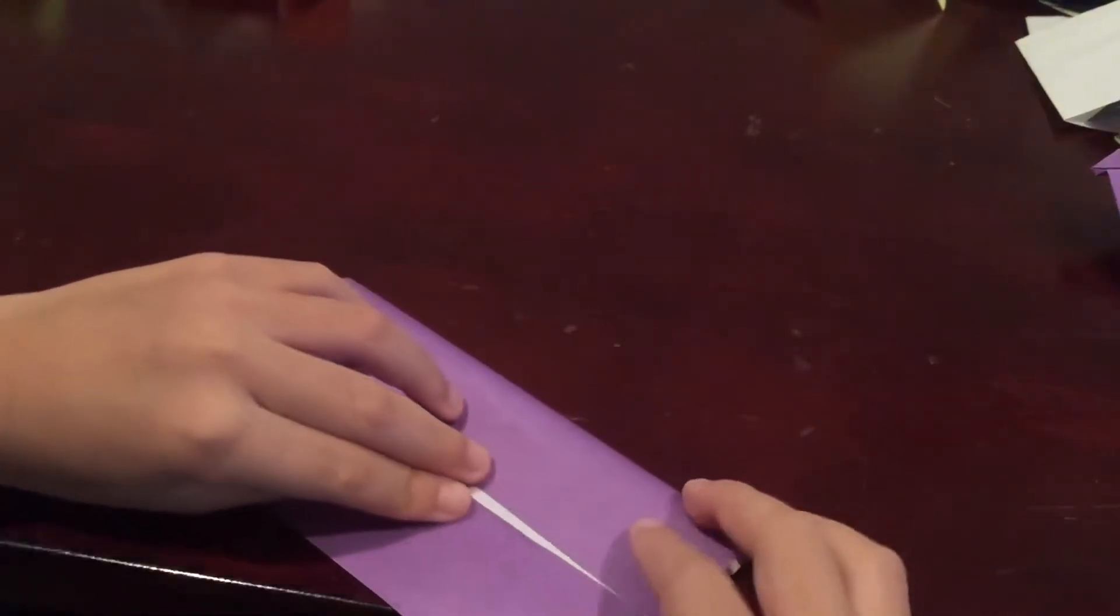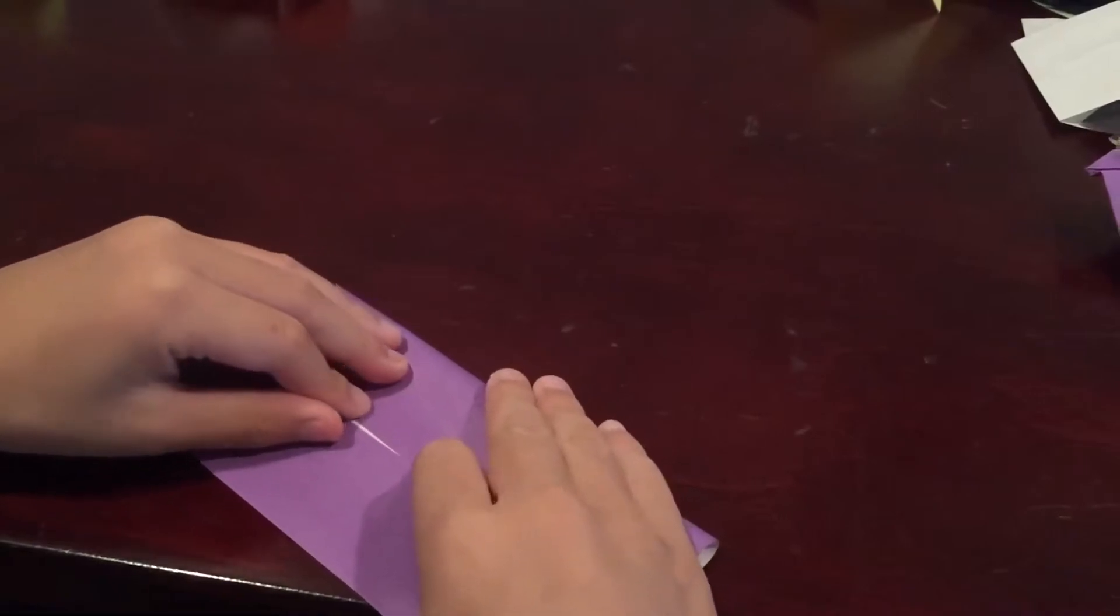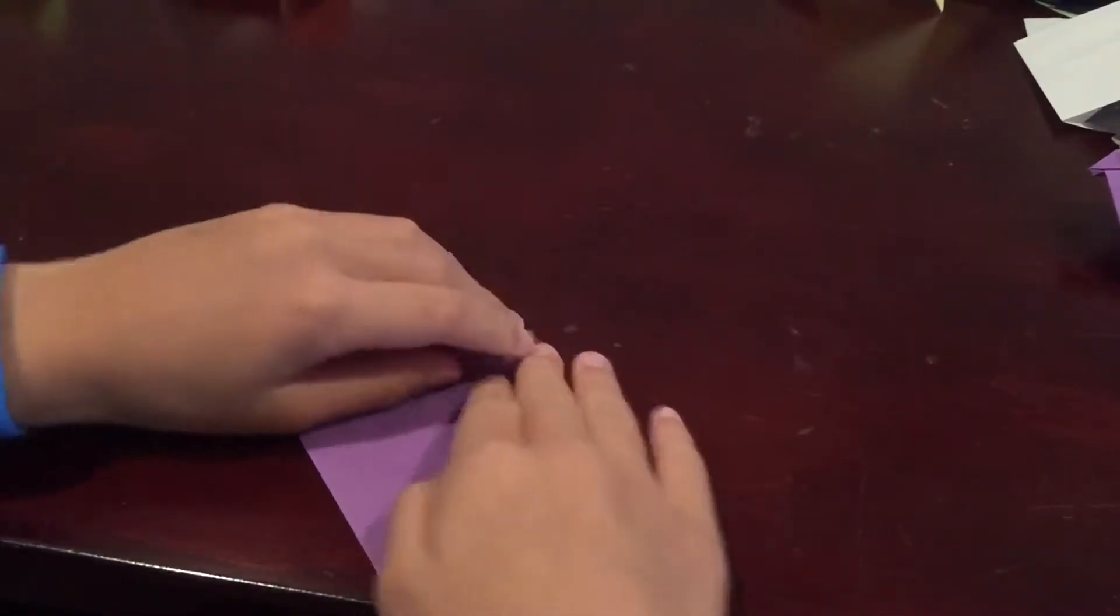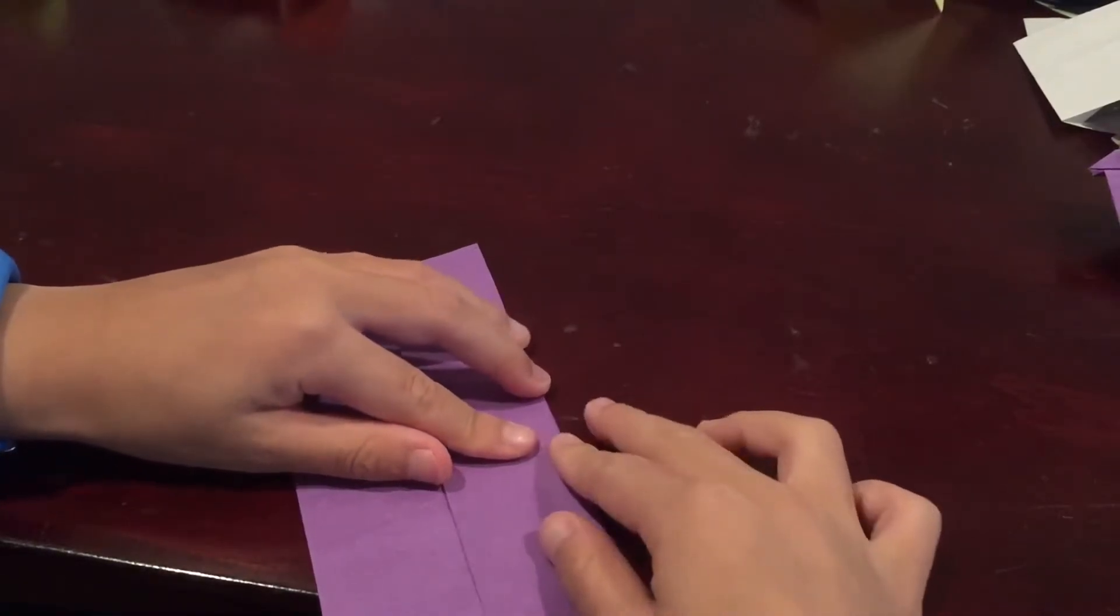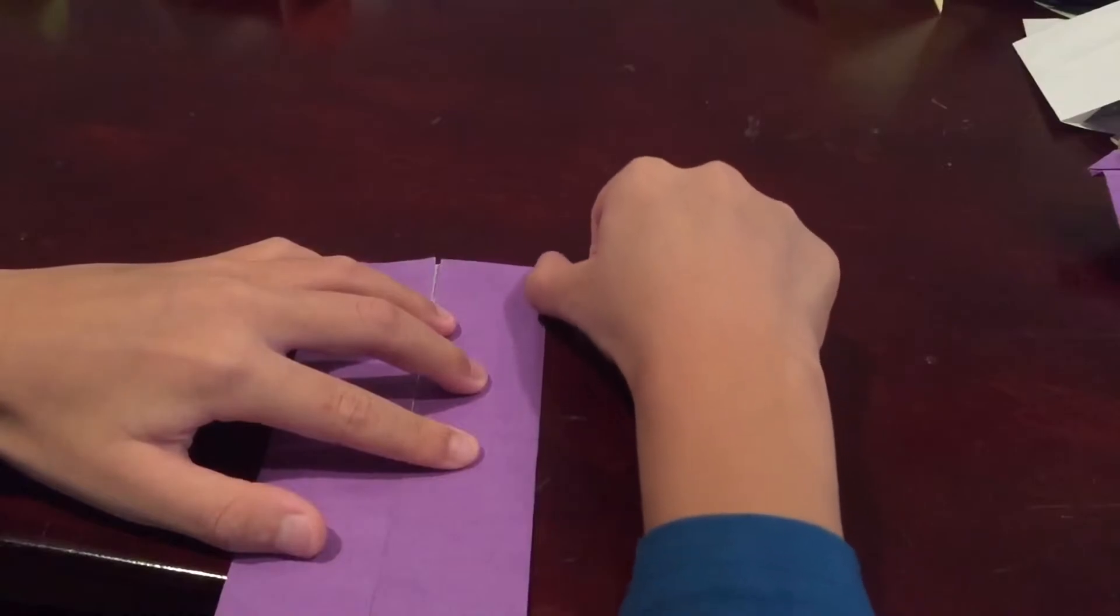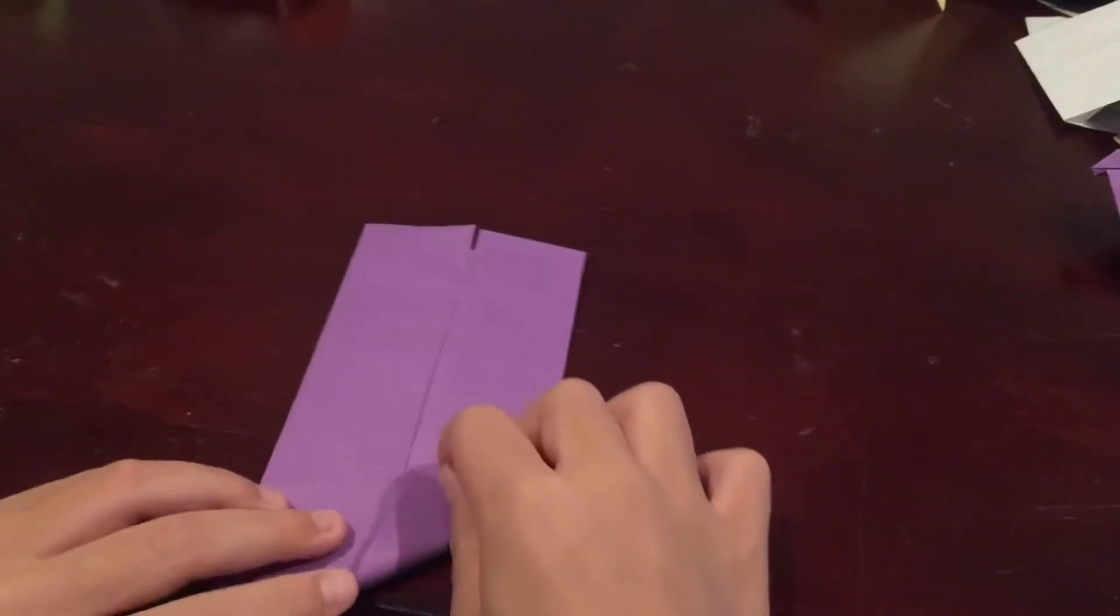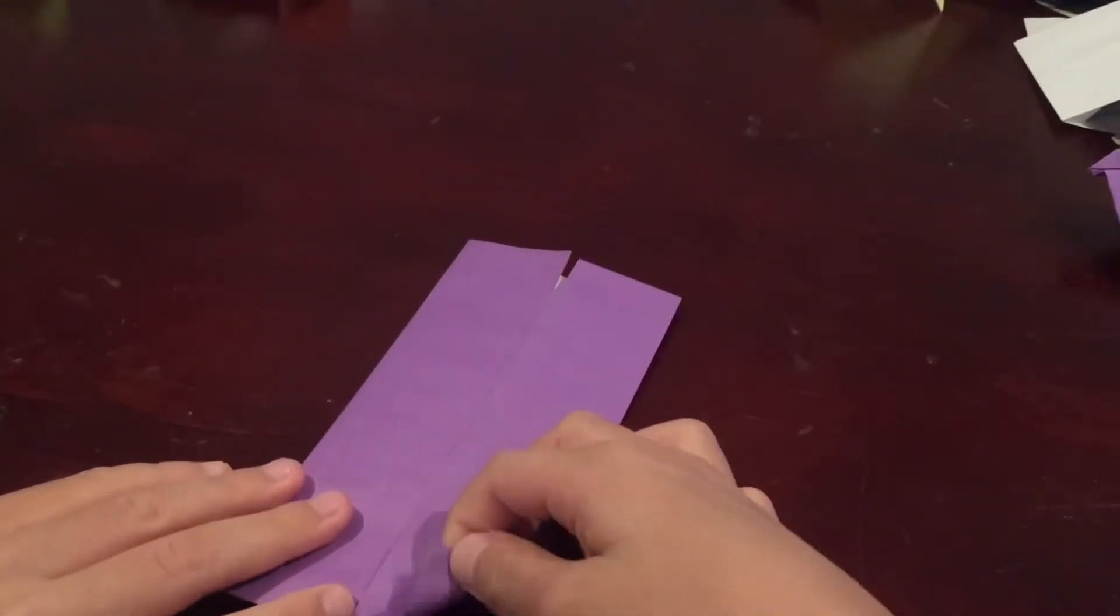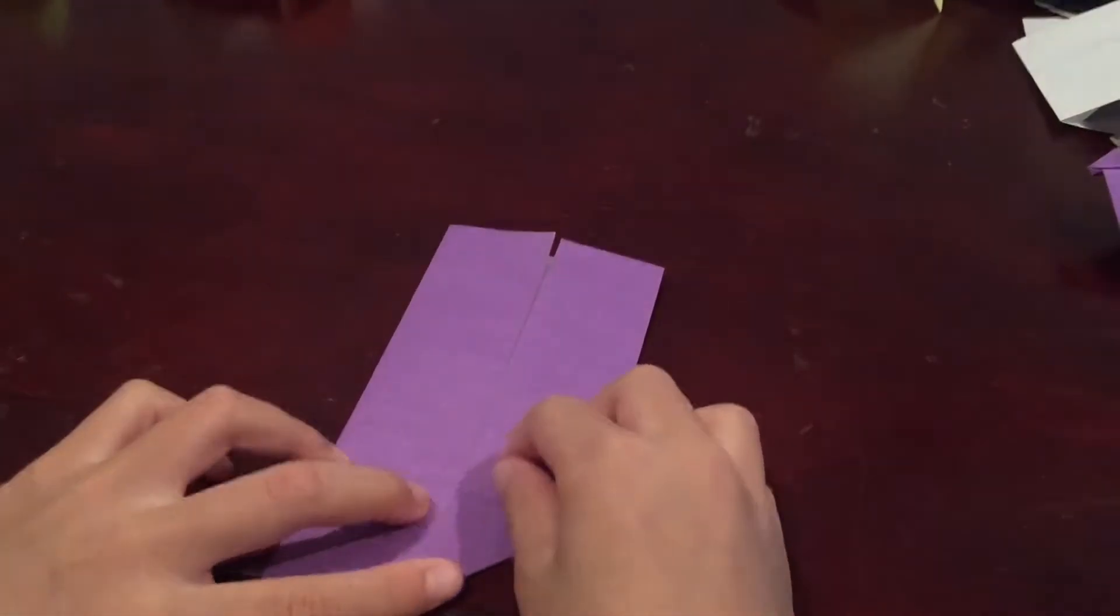Turn it to this side. Fold it down and crease it like this. And then you want to take this here and fold it up to the top to that crease right there.